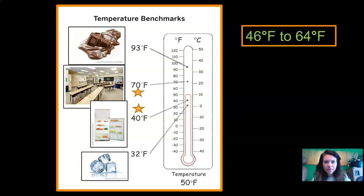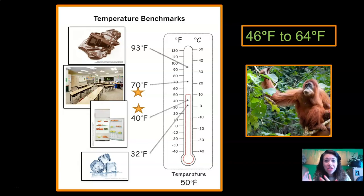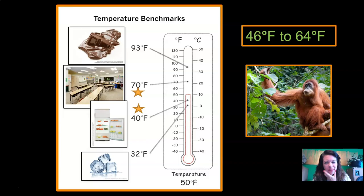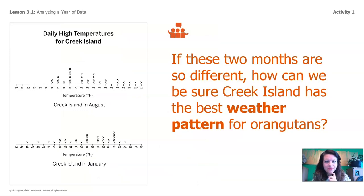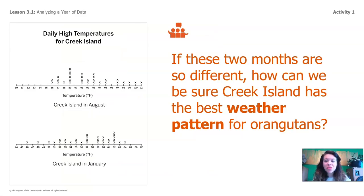Does that seem very warm? No — and we know orangutans need a warm, hot, rainy climate in order to live. That makes me wonder some questions about Creek Island. If these two months are so different, how can we be sure Creek Island has the best weather pattern for orangutans?